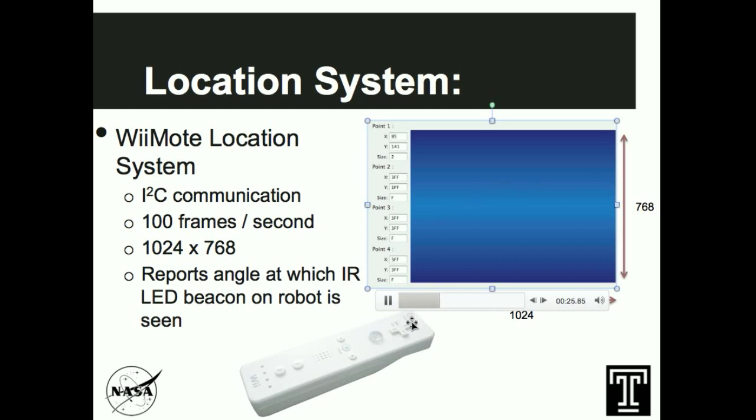At the front of this Nintendo Wiimote there is an infrared camera, and what you are looking at on this display is the output of this infrared camera. The camera has a 1024x768 screen that is refreshed approximately 100 times per second. It gives you the X and Y coordinate as well as a size reading of the four brightest points of infrared light that the camera is able to see.